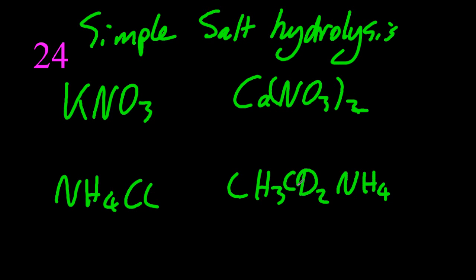So for the first one, it's potassium hydroxide and nitric acid. So that's going to be a strong base and a strong acid. For the second one, calcium hydroxide and nitric acid. Calcium hydroxide is a weak base. Nitric acid is strong.